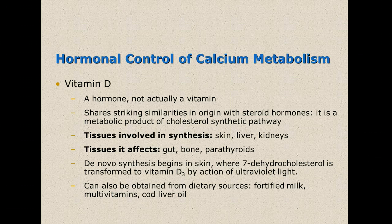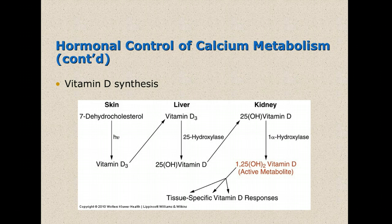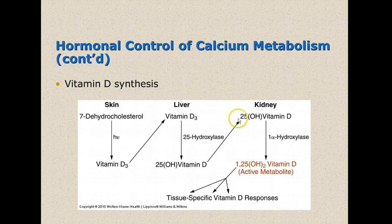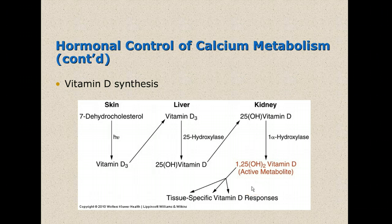We can also get vitamin D from fortified milk, multivitamins, and cod liver oil. In the synthesis pathway, 7-dehydrocholesterol in the presence of light converts cholesterol into vitamin D3. Vitamin D3 travels to the liver, where an enzyme called 25-hydroxylase gives us 25-hydroxy vitamin D. That then travels to the kidney, where 1-alpha-hydroxylase gives us the metabolically active 1,25-dihydroxy vitamin D, which is needed for the tissue-specific vitamin D responses.